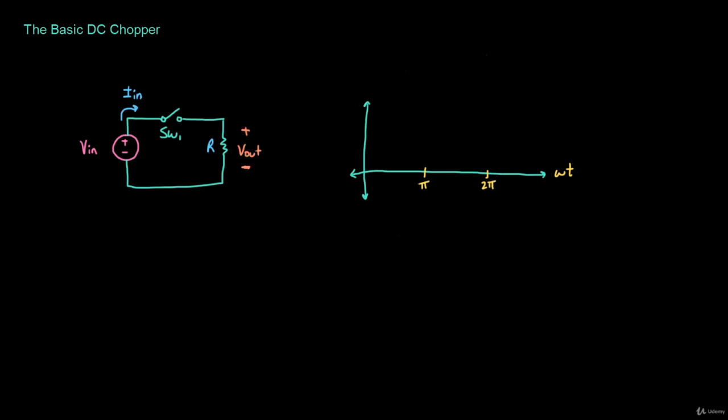For example, if switch one is on for a certain amount of time during one period and then it is off during the rest of the period, then the average of the output voltage has to be lower than the input voltage over one period. Because the output voltage is going to be equal to the input voltage during some time and then equal to zero during the rest of the period, so the average works out to being lower than the input voltage.